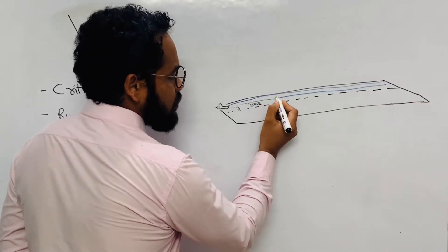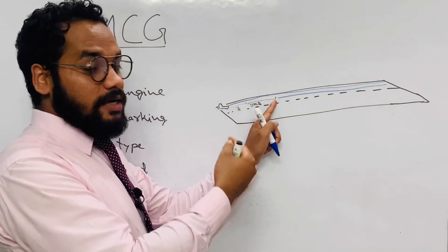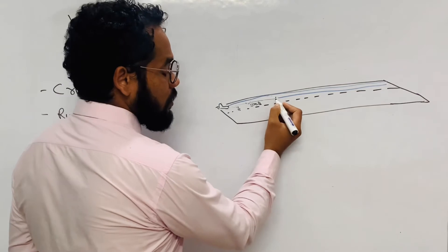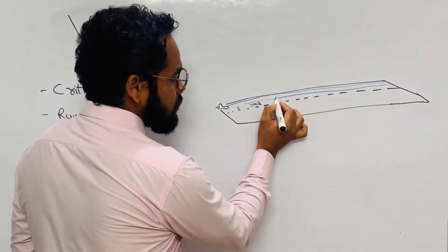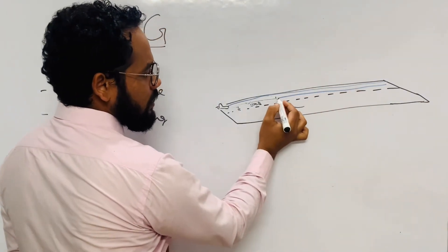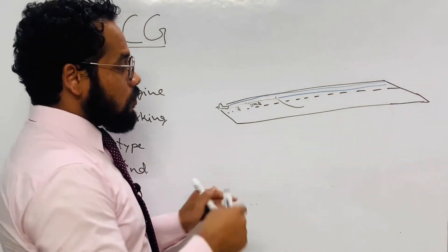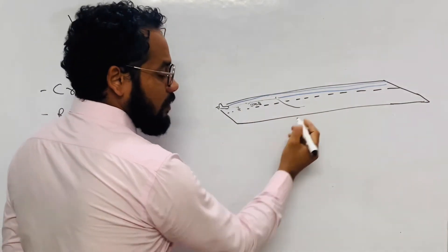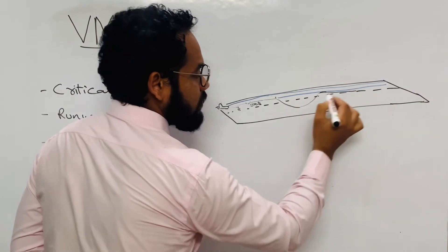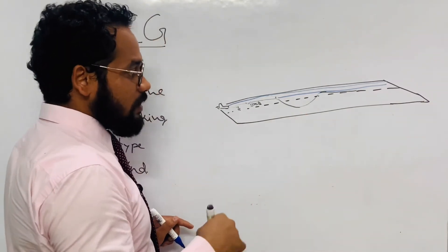When the aircraft reaches the final target speed — computed prior to the test — the other pilot shuts down the engine using the master switch. Suppose the right-hand side engine is shut down; the aircraft will start deviating from its path. The blue line represents the axis the aircraft was supposed to follow. Once the handling pilot notices the deviation, he immediately applies maximum pedal deflection so the aircraft starts moving back towards the blue axis or a path parallel to it.